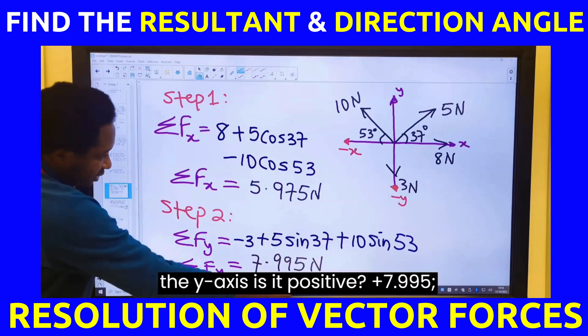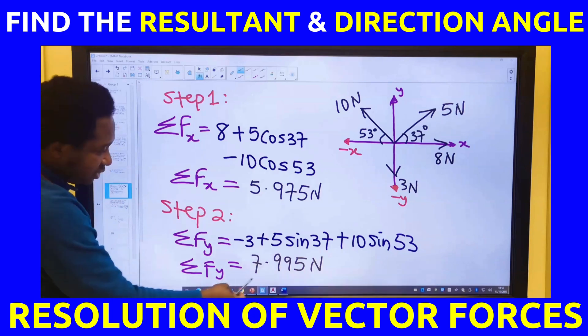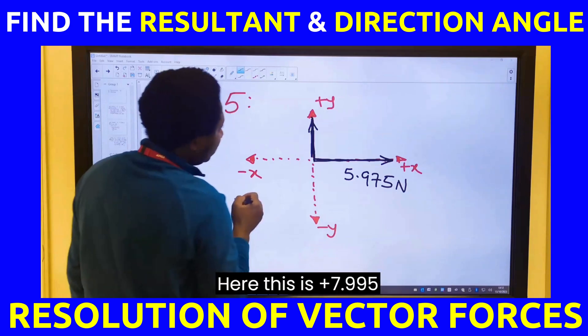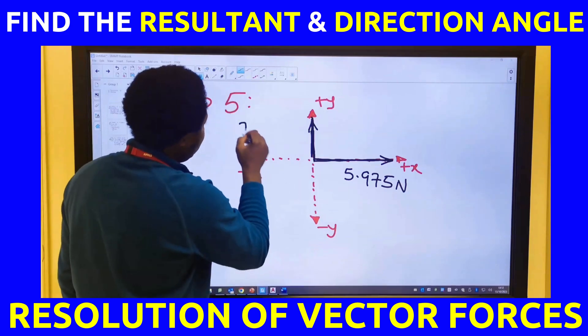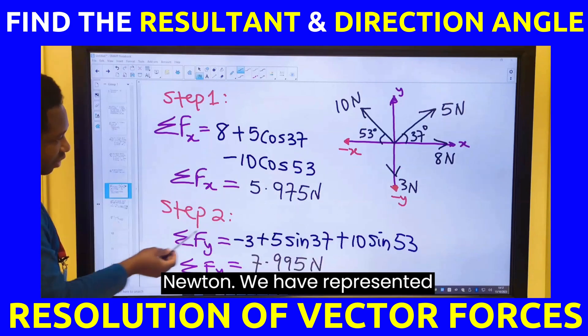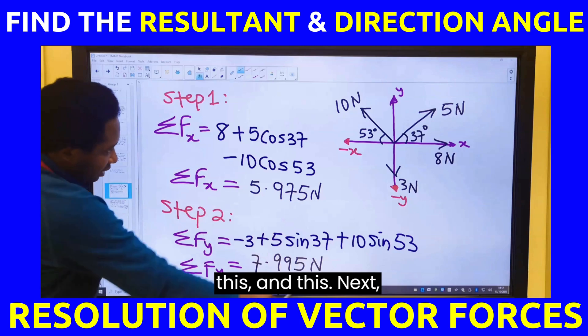The y-axis. Is it positive? 7.995. This is positive. Here, this is positive. 7.995 newtons. We have represented this and this.